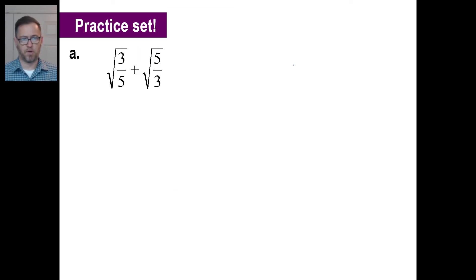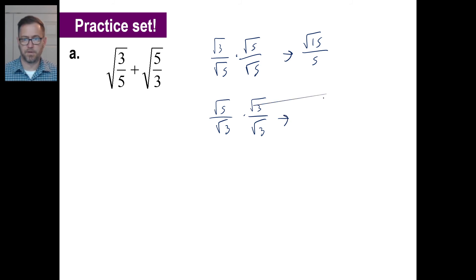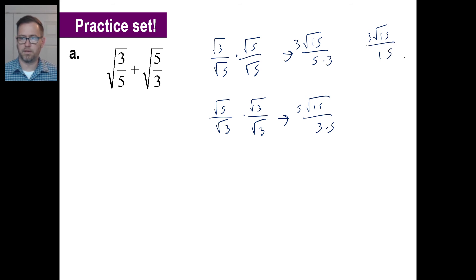Try the first practice problem — go ahead and pause and give it a whirl. Here's how I want to take care of the first one. I'm going to multiply by the square root of 5. That gives us the square root of 15 over 5. The second one: the square root of 5 over the square root of 3, multiplied by the square root of 3 on top and bottom. That gives us the square root of 15 over 3. Let's go ahead and multiply by 3 here and 3 there, and then by 5 here and 5 here. So we have 3 square root of 15 over 15, and we have 5 square root of 15 over 15. So here we have 8 square root of 15 over 15.